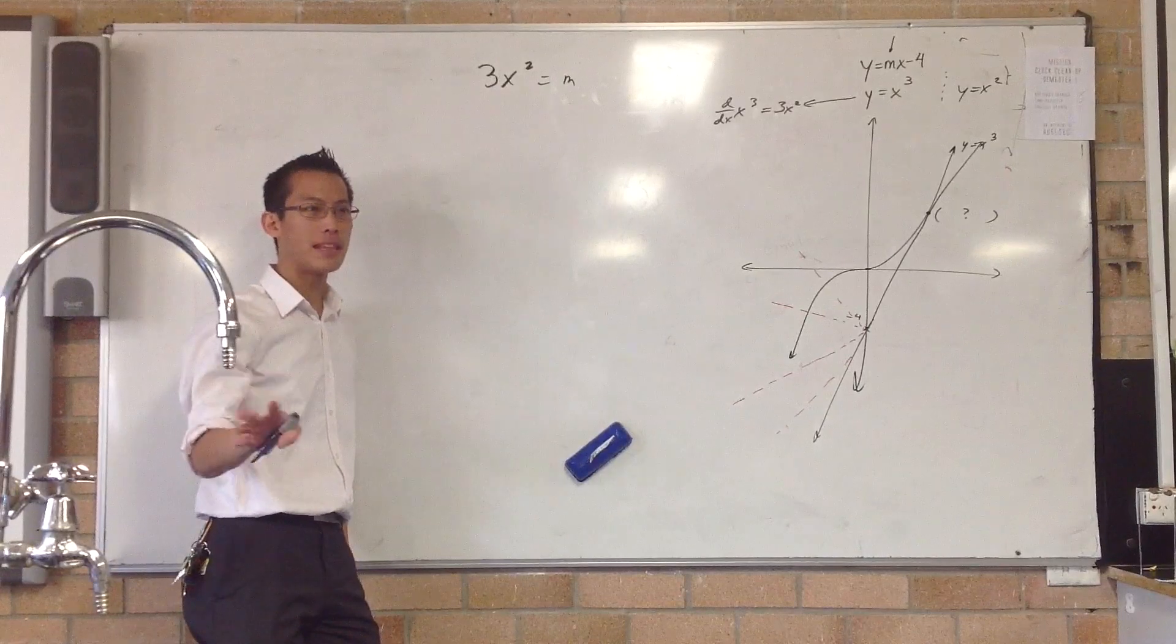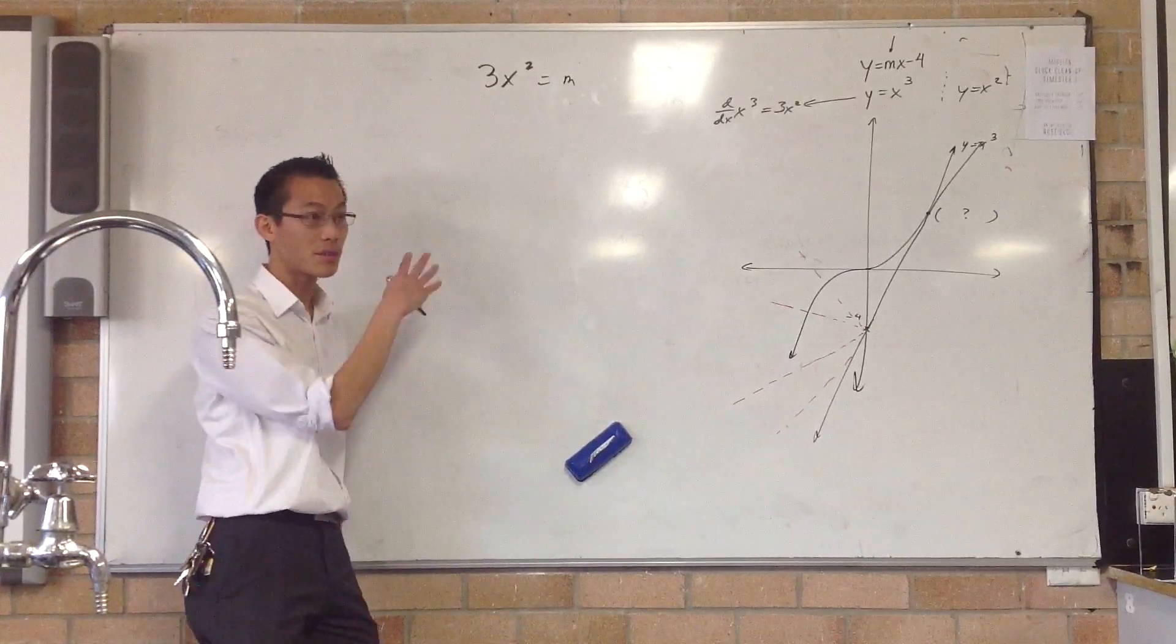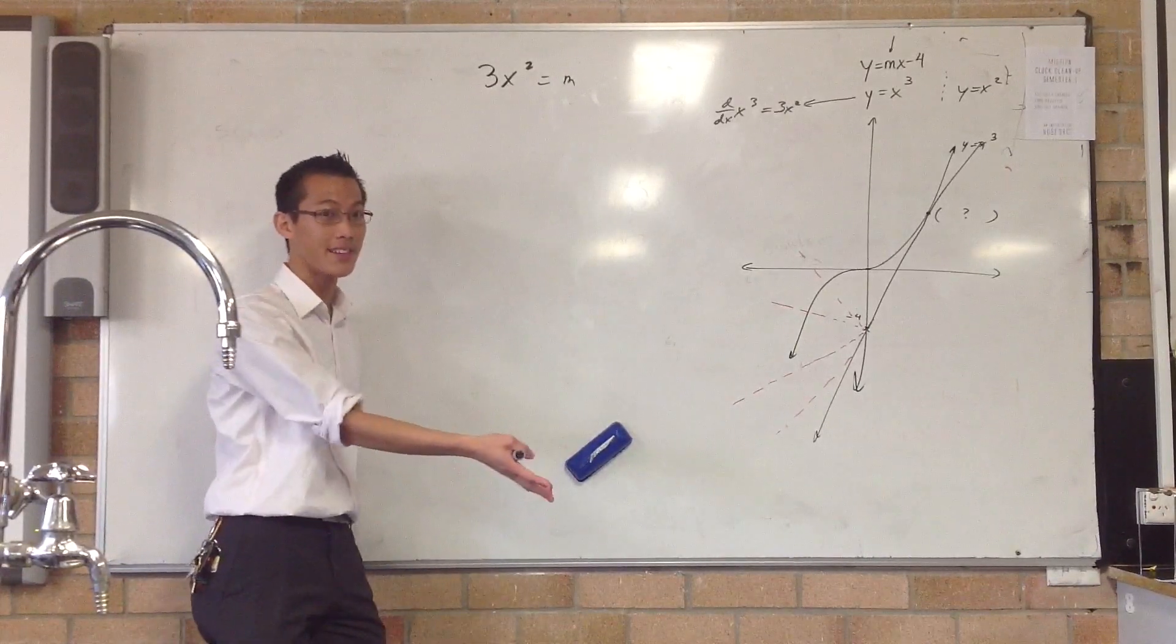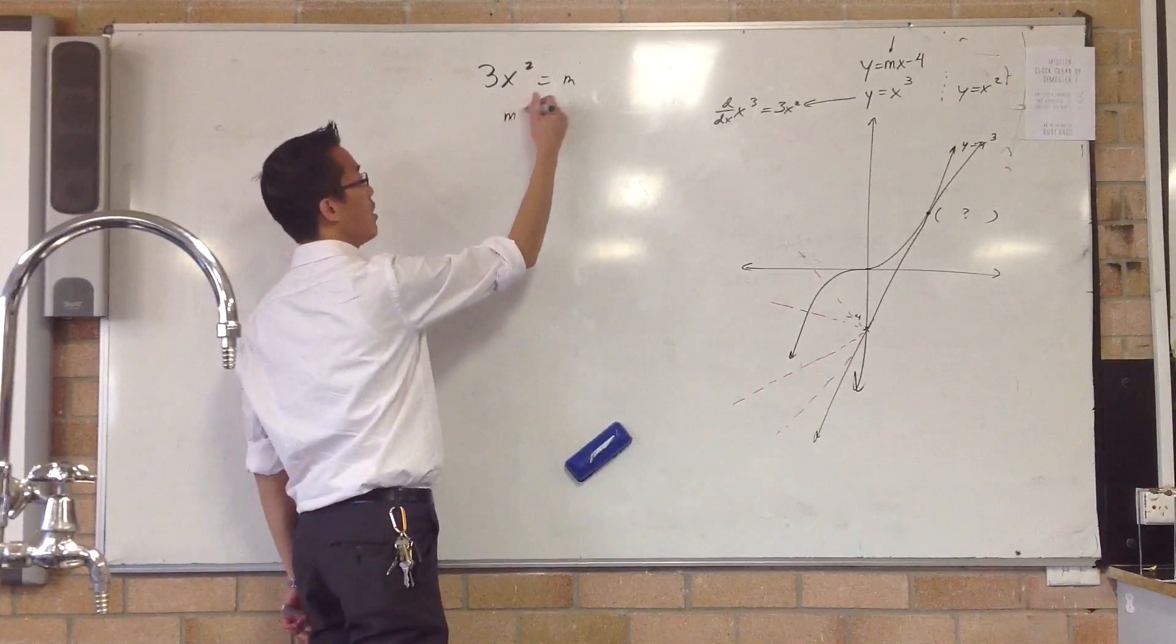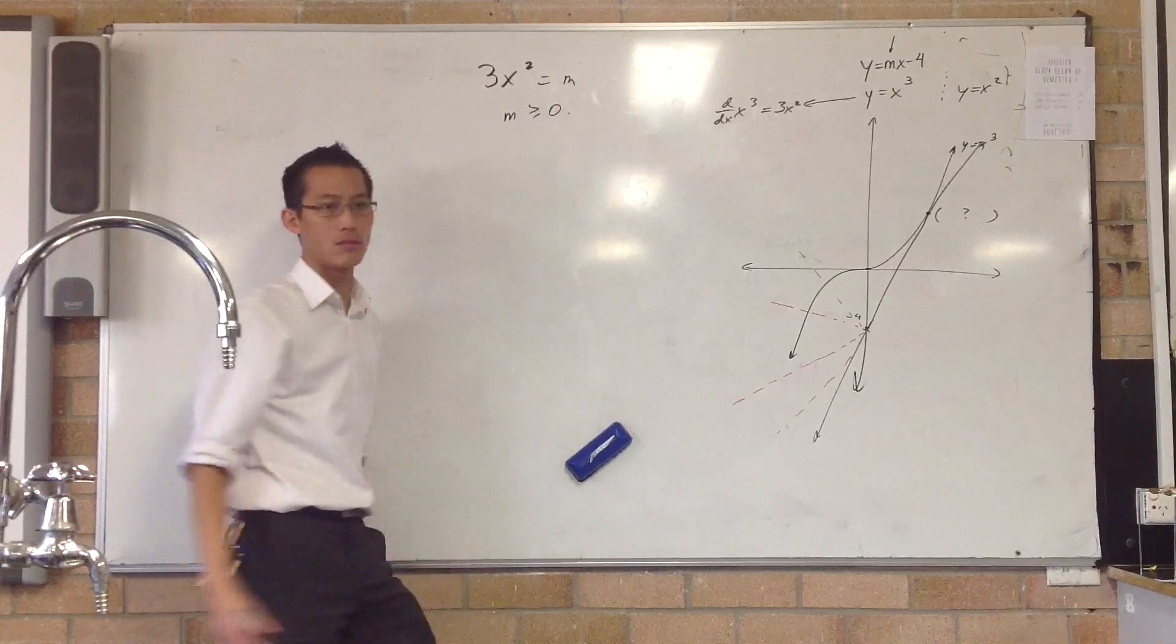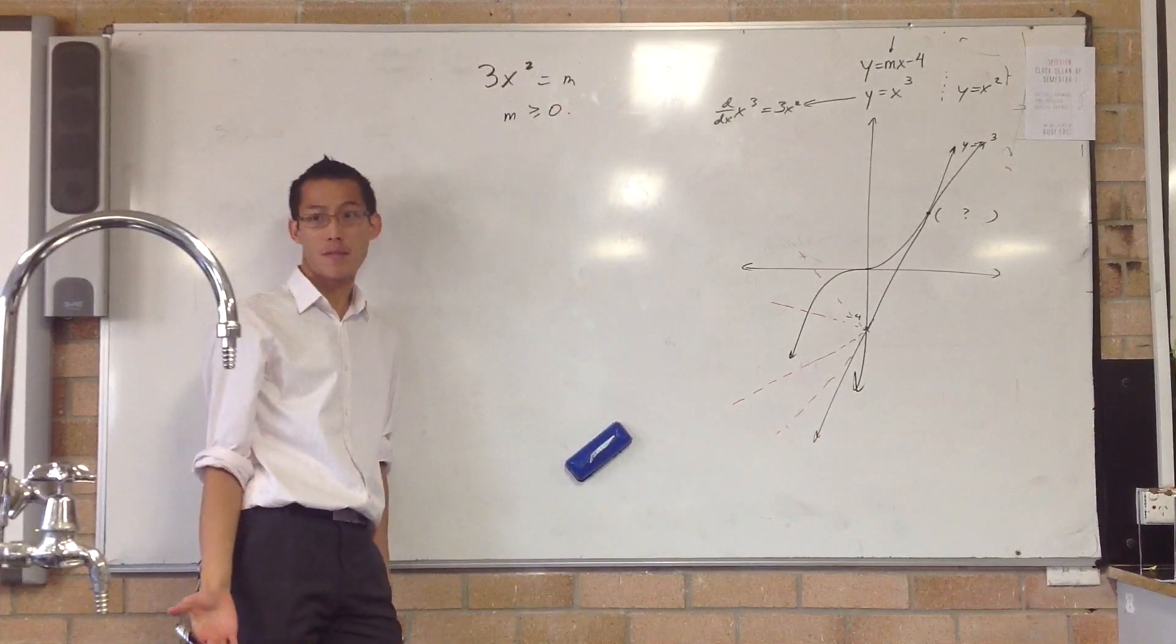Now, okay, before we leave this, okay? This is true. I'm not subbing it into anything else because that's going to lead us to problems. What I can say from this is, therefore, M has to obey this rule. Can you see? That makes sense, right?